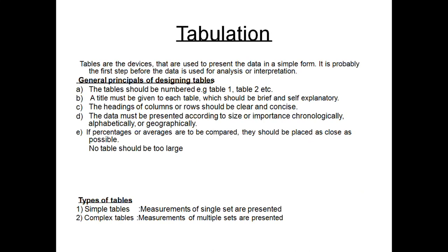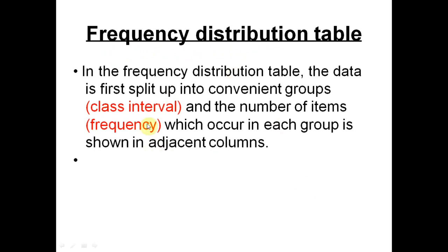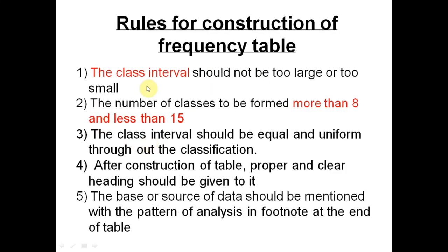Regarding tabulation, the basic principles are: number and title tables properly with appropriate headings, and tables should not be very large. Types are simple and complex tables. For frequency distribution tables, we make class intervals and frequencies. Class intervals should not be too large or too small, and the number of classes should be between 8 and 15.